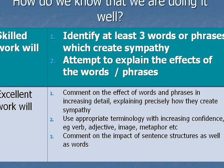Other indicators of excellence are using appropriate terminology. So you might be able to explain that Bronte uses particular verbs or adjectives — you might know the language to describe the way writers use language. You might talk about imagery or metaphor, simile, alliteration, whatever you think is present in the text. You might also move on to look not just at words but at the impact of sentence structures as well — for example, short sentences or long sentences — and talk about the effects of them.